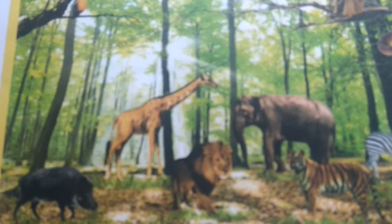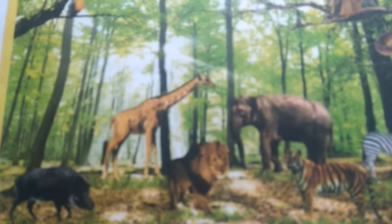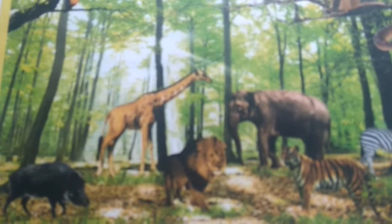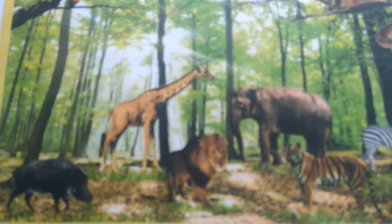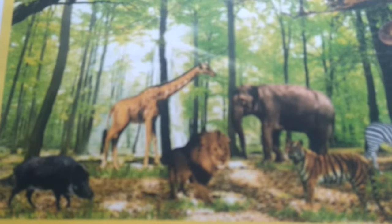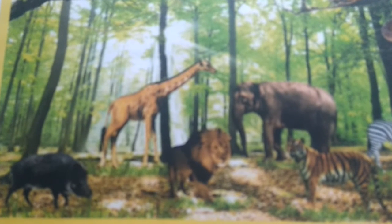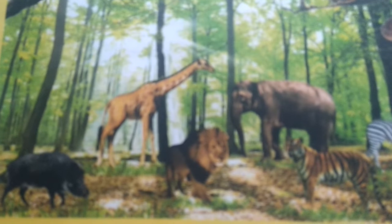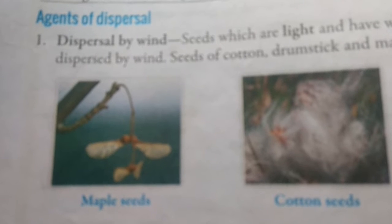Dispersal of seeds occurs by the help of various agents such as air, water and animals. These agents are known as agents of dispersal. Now let's start the brief description of agents of dispersal.